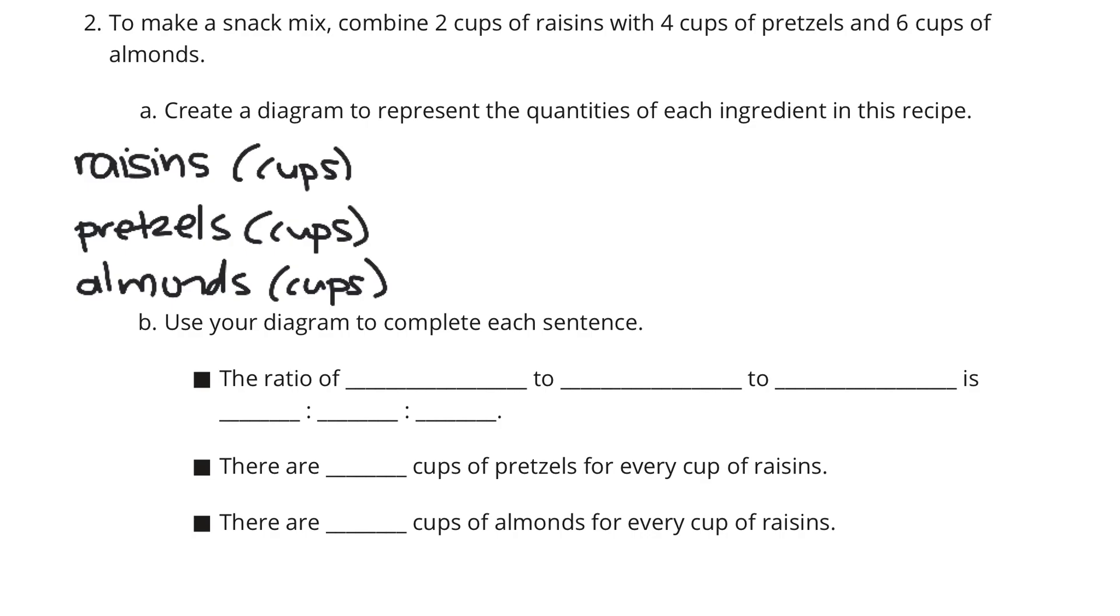And so, for raisins, we're going to have 2 cups of raisins. So, I'm going to have 2 squares for that about equal size. Pretzels were 4 cups of pretzels. 1, 2, 3, 4 cups of pretzels. And 6 cups of almonds. 1, 2, 3, 4, 5, 6.